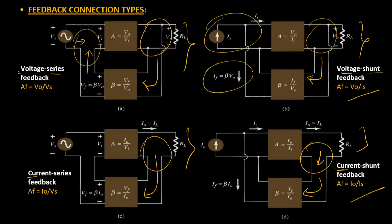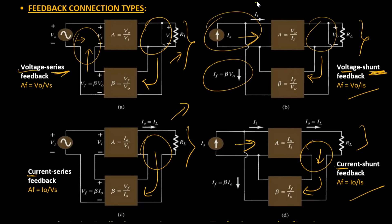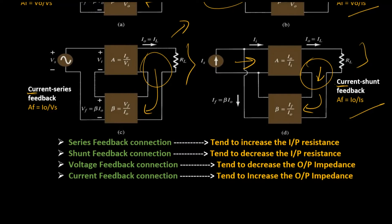From our discussion, we know that the terms voltage and current represent the connection types on the output side of the networks. Therefore, they are related to the output impedance of all four networks. Likewise, the terms series or shunt refer to the connections on the input sides of the networks, and therefore these terms are connected to the input resistance. Here is the summary of how they are going to affect the various resistances on input and output sides.